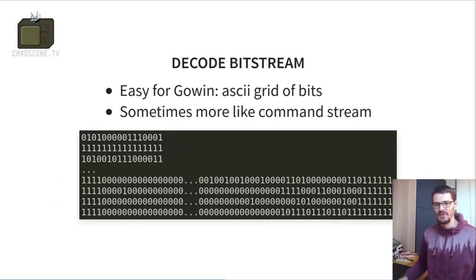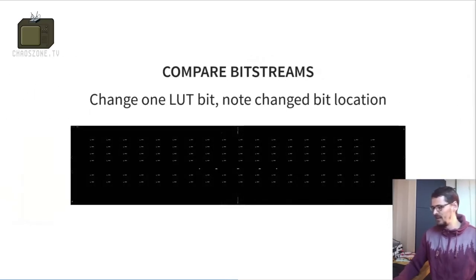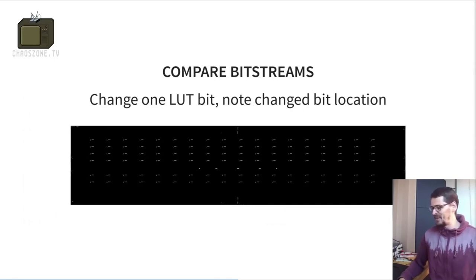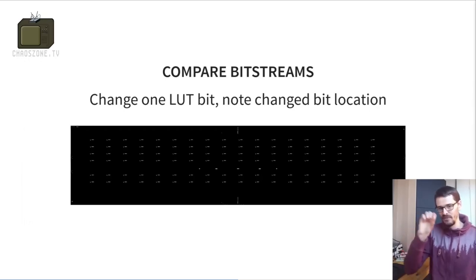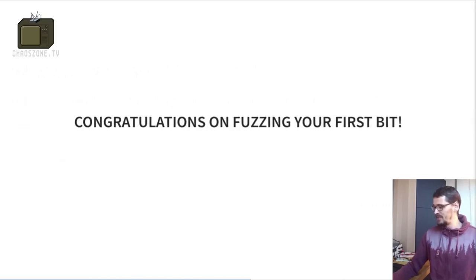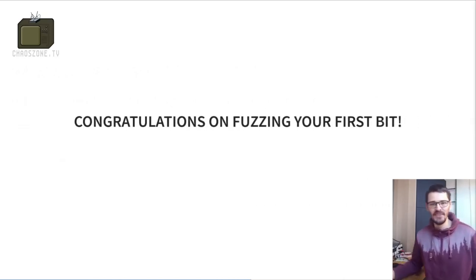I wrote a little Python script that takes these bitstreams and makes an image out of them, where you can see all the little lookup tables as squares with flip-flops next to them. This was basically a big NumPy array, and you can just XOR two bitstreams to get the difference bits — that's how I figured out the differences. Congratulations, that was your first fuzzing of a bit — yay, only a million more to go.